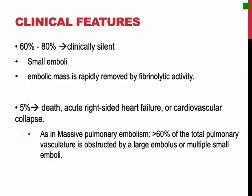Pulmonary thromboembolisms are mostly clinically silent because they are small, so the bronchial circulation sustains the viability of the affected lung parenchyma, and the embolic mass is rapidly removed by fibrinolytic activity. In 5% of cases, death, acute right-sided heart failure, or cardiovascular collapse occurs suddenly, as in massive pulmonary embolism. This typically happens when more than 60% of the total pulmonary vasculature is obstructed, either by a large embolus or multiple simultaneous small emboli. In 10-15% of cases, pulmonary embolism is associated with obstruction of small-to-medium-sized pulmonary branches, and pulmonary infarction will follow, especially if some element of circulatory insufficiency is present.